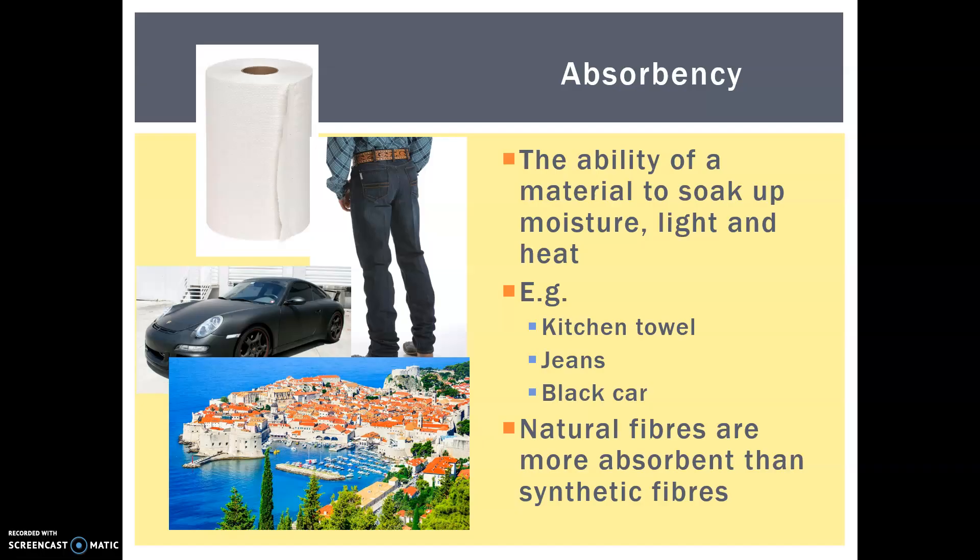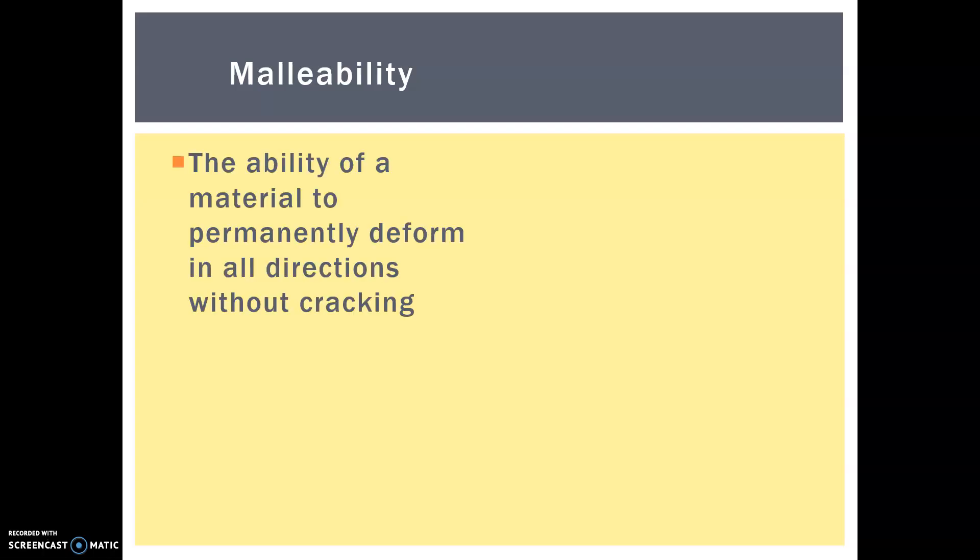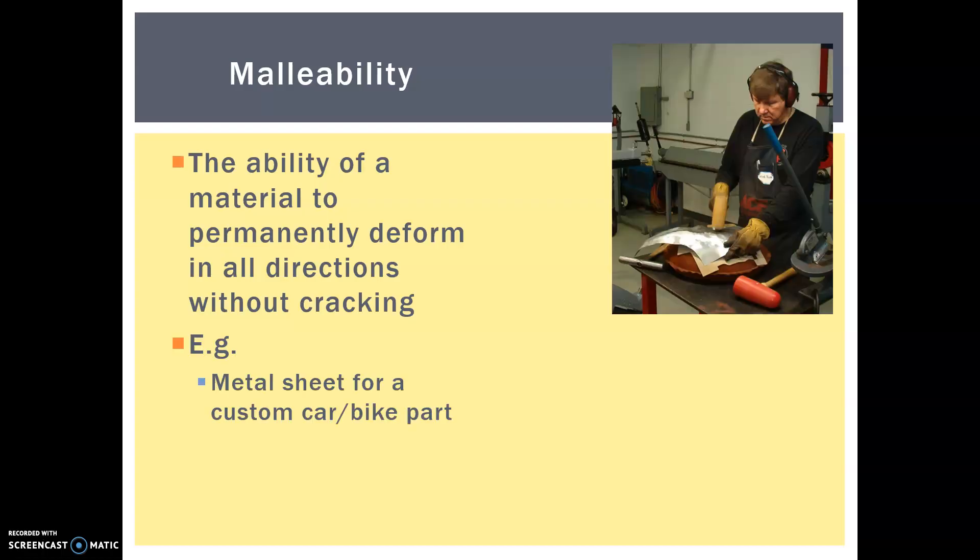Next we have malleability. This is the ability of material to permanently deform in all directions without cracking. So for instance, if you're going to bash away a piece of sheet material to create a custom part for a motorcycle.